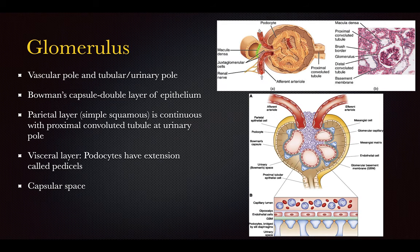The glomerulus has two parts: a vascular pole well supplied with blood, and a tubular urinary pole where filtration takes place. Bowman's capsule surrounds it as a double layer of epithelium. The inner parietal layer is simple squamous and is continuous with the proximal convoluted tubule at the urinary pole. The visceral layer has podocytes that support and maintain the filtration membrane. Surrounding all of this is the capsular space.